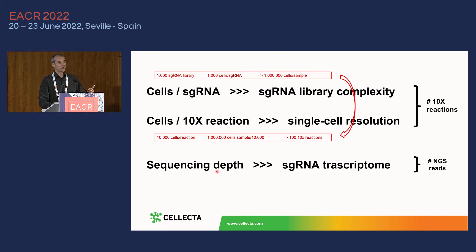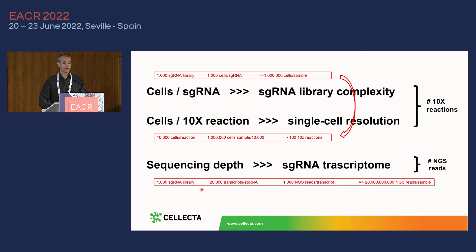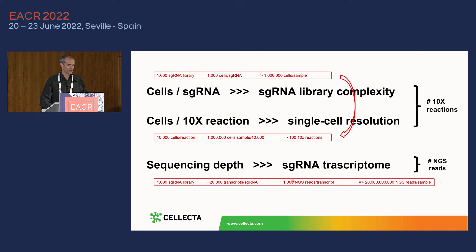Now let's look at sequencing. In a standard CRISPR genetic screen you want about 500 to 1,000 reads per sgRNA, but in PerturbSeq you are not just counting sgRNAs — you are detecting them and then counting the messenger RNAs associated with each sgRNA. Each sgRNA is associated with the full transcriptome, so you need to reliably count the abundance of 20,000 different transcripts. If you want 1,000 reads per messenger, the math is 1,000 × 20,000 × 1,000 = 20 billion reads per sample, which is a lot of money.